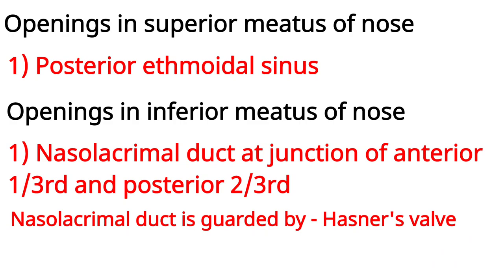Now let us see which sinus opens into which meatus. The superior meatus is the passage under the smallest concha, the superior concha. This passage receives the opening of only one sinus — the posterior ethmoidal sinus.